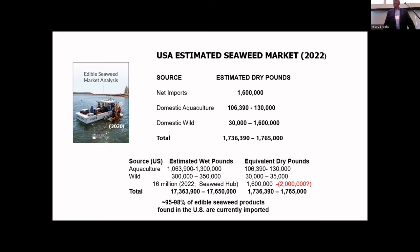In 2009, we set up the first seaweed farm up in the Portland, Maine area. There was no production in the United States — we didn't even register on the FAO list. Today, we're looking at production in the United States of well over 2 million pounds of seaweed, and it's growing exponentially.